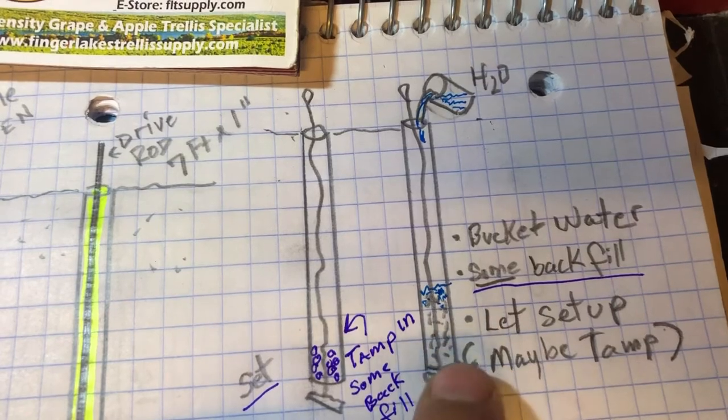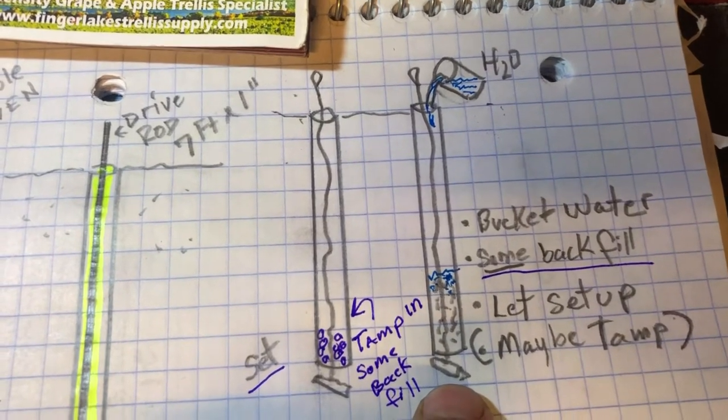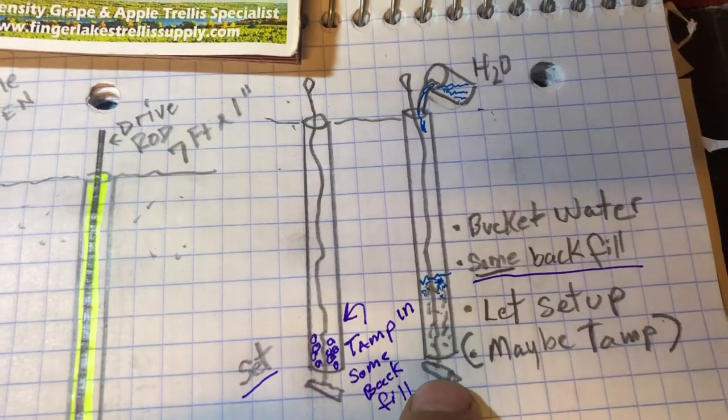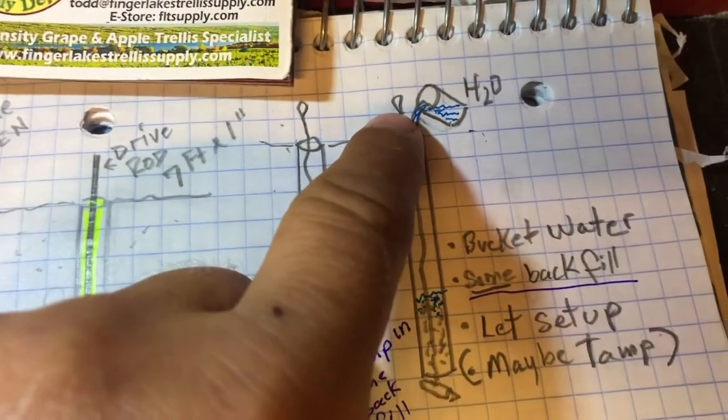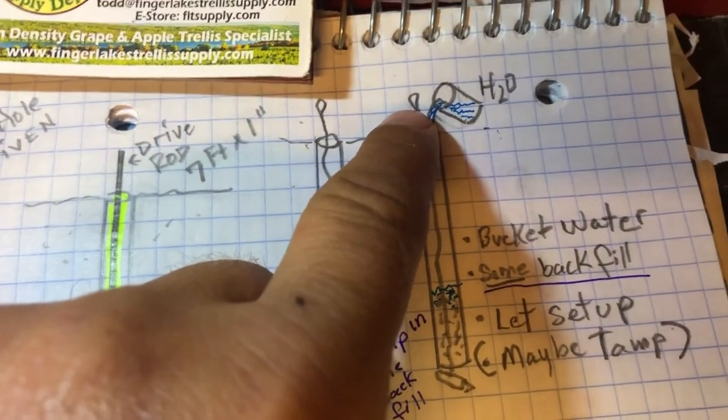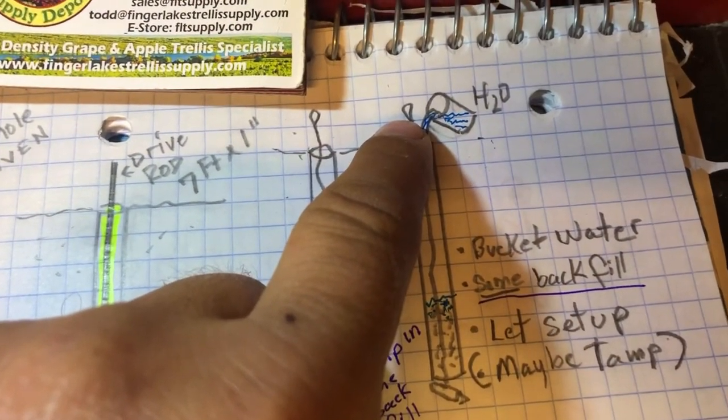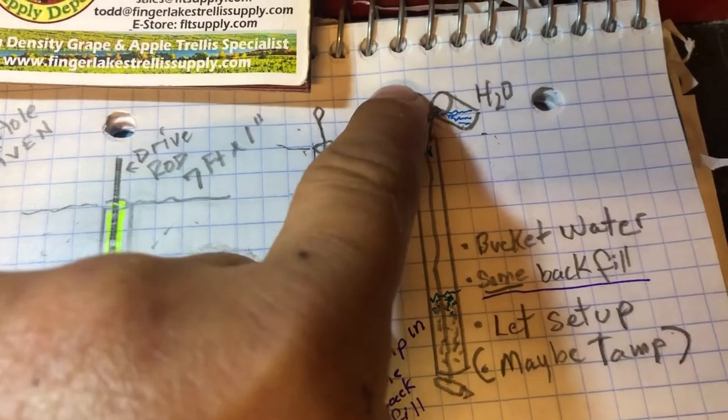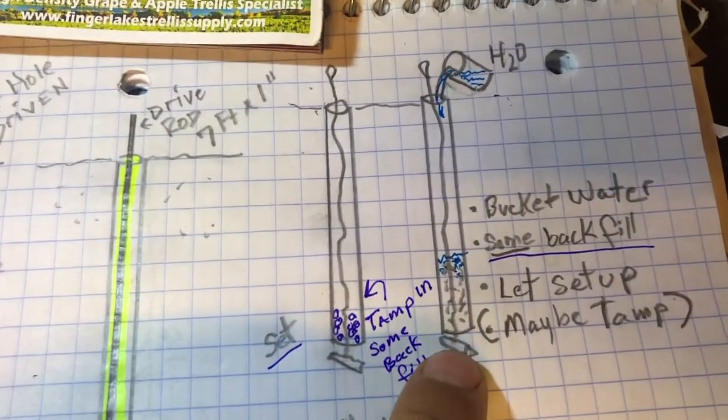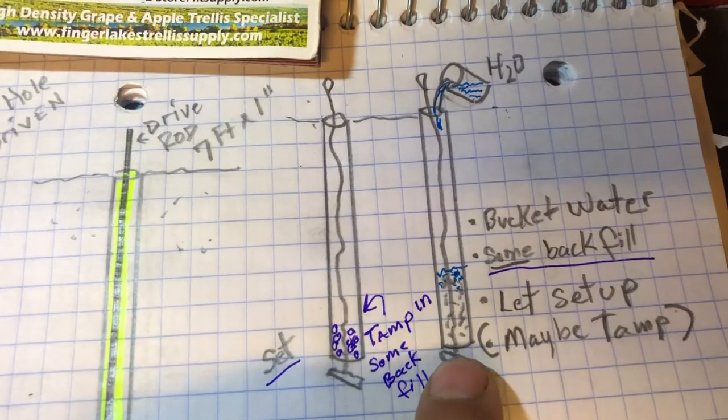So then you would, like this application with the water, maybe come back the next morning and then hook onto this, whatever you're going to do, a chain or by hand, and pull that cable up so that this gripple anchor turns and sets itself.